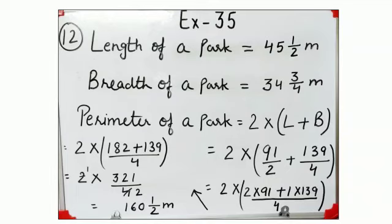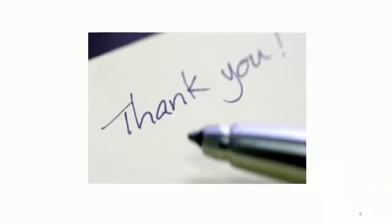Remember, perimeter of square is 4 multiply side, and perimeter of rectangle is 2 into length plus breadth. Hope you understand the concept of these word problems. Thank you and have a nice time.